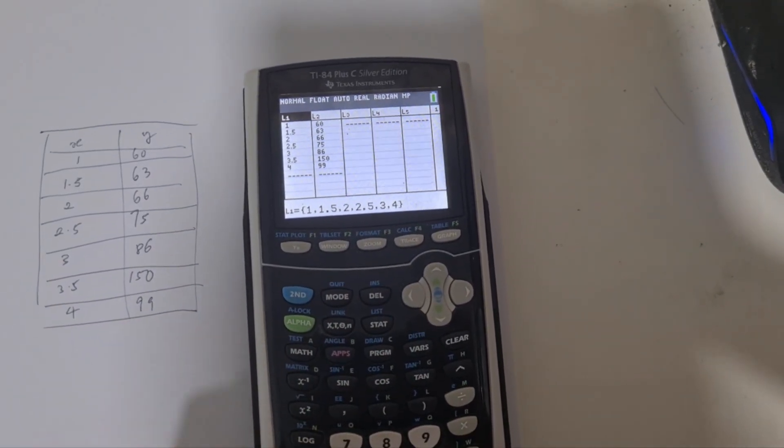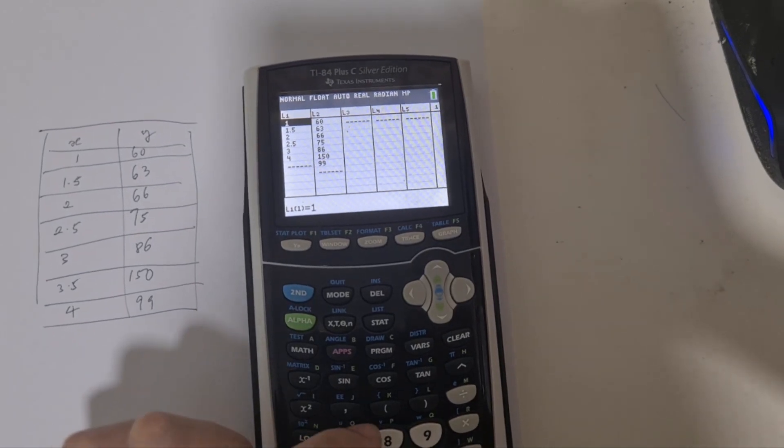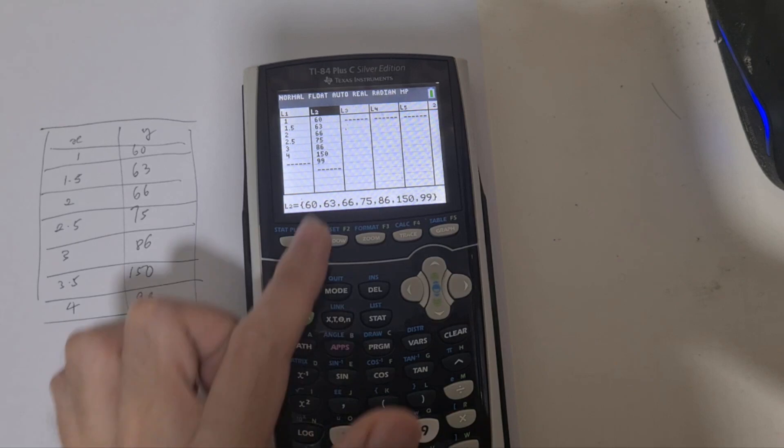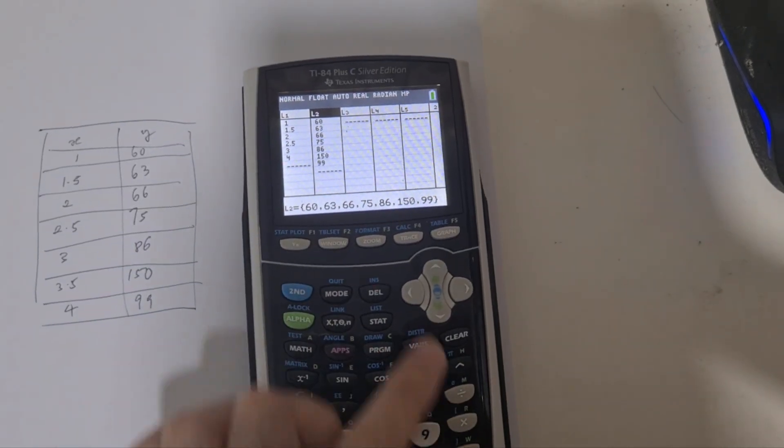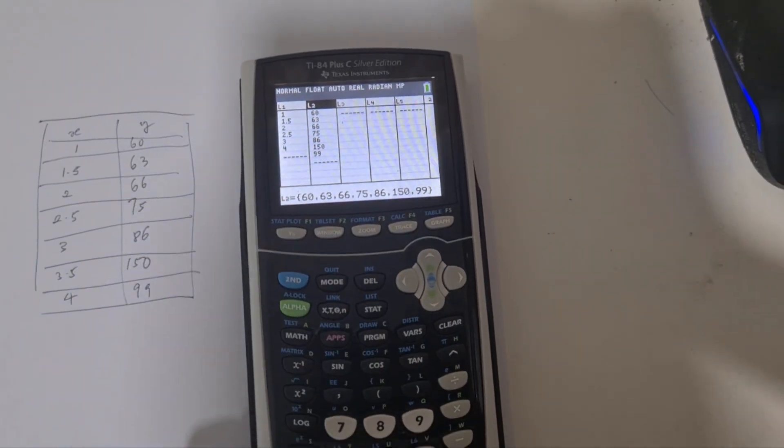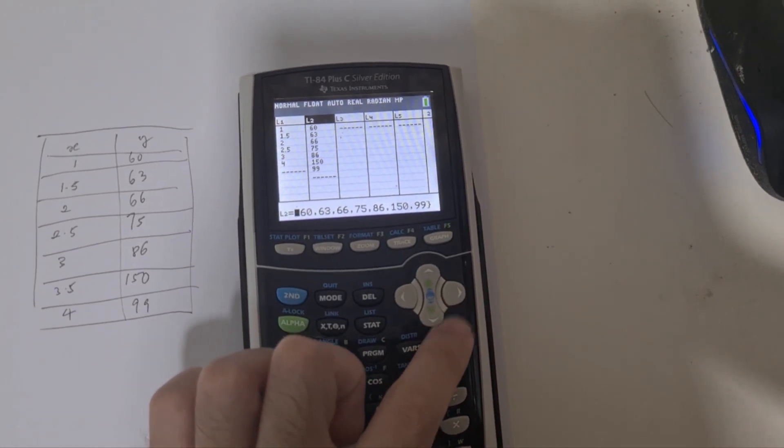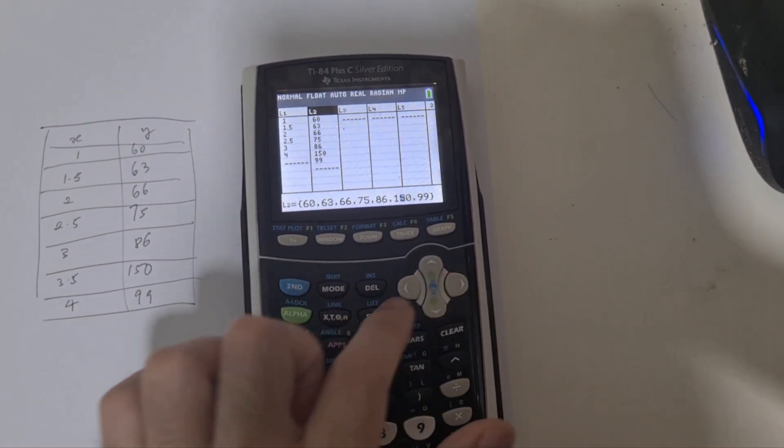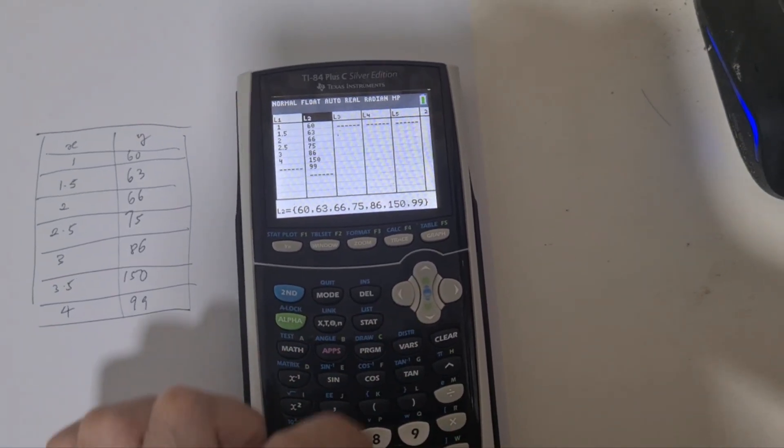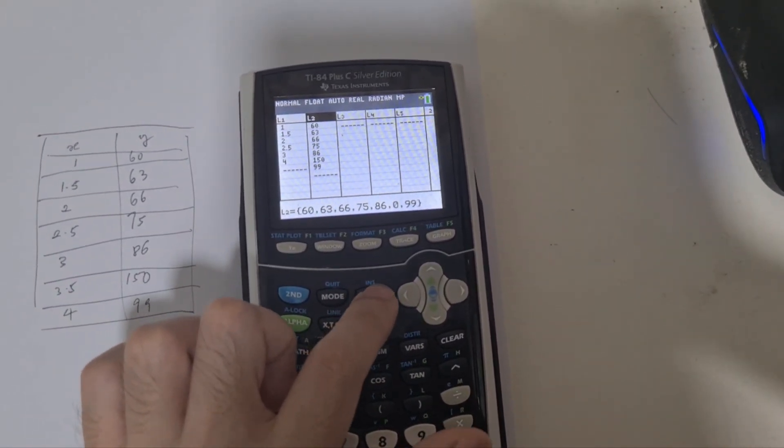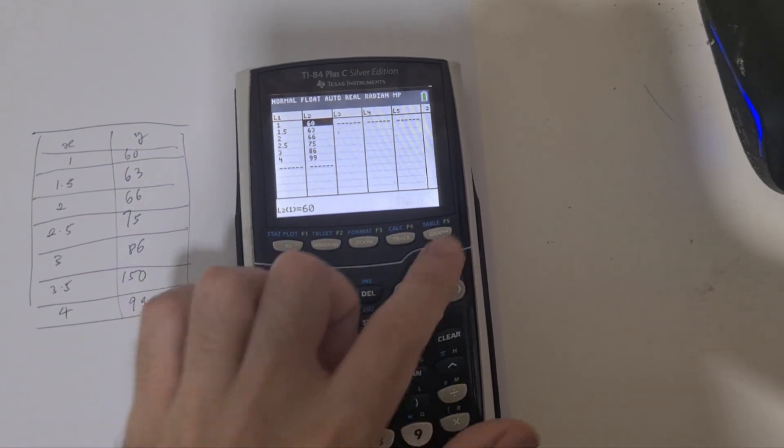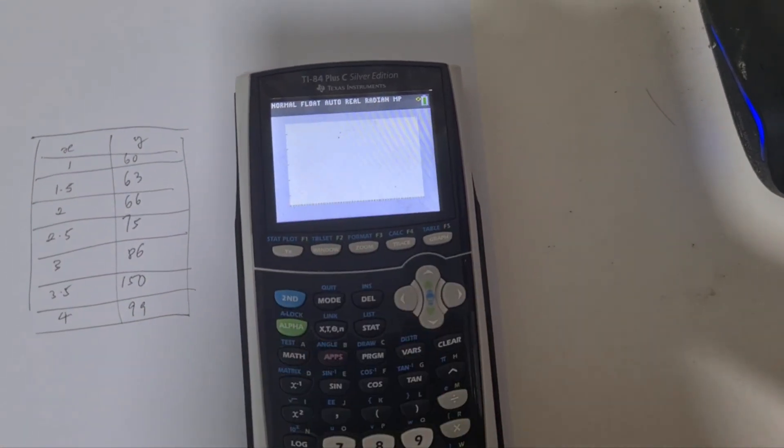Then we do the same thing to the L2 cell. We highlight the L2 cell by navigating to it, click ENTER, use the arrow to go to the value 150, remove the value, and press ENTER. After which you can visualize the graph again, and now my outlier is gone.